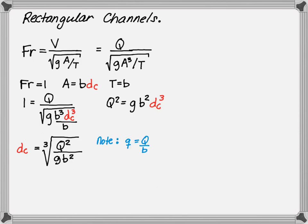It should be noted that the unit discharge, q, is equal to the flow rate divided by the base width. So we can further simplify the critical depth as the cube root of the unit discharge squared divided by gravity.